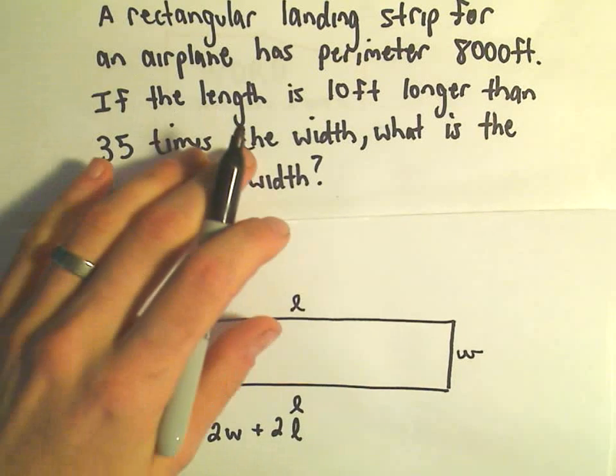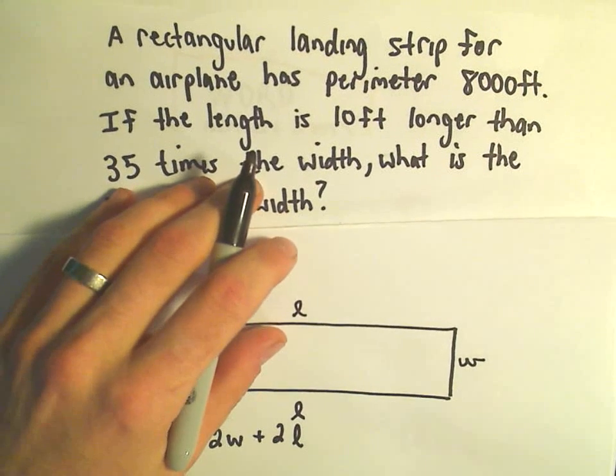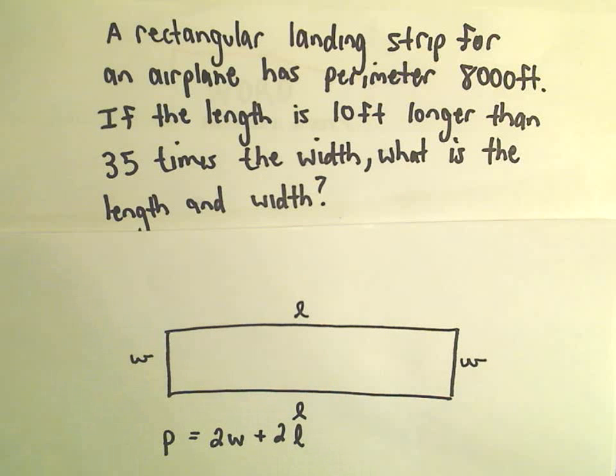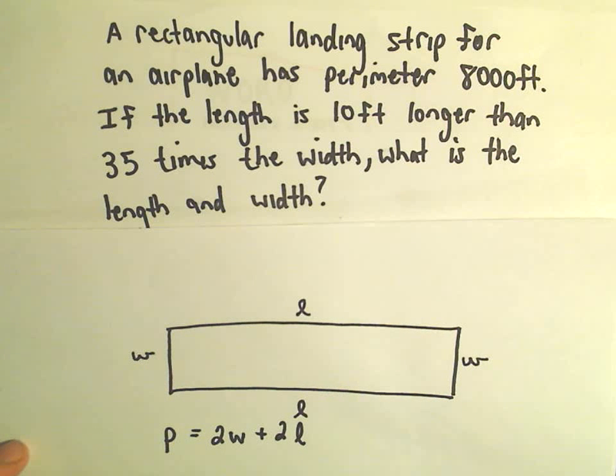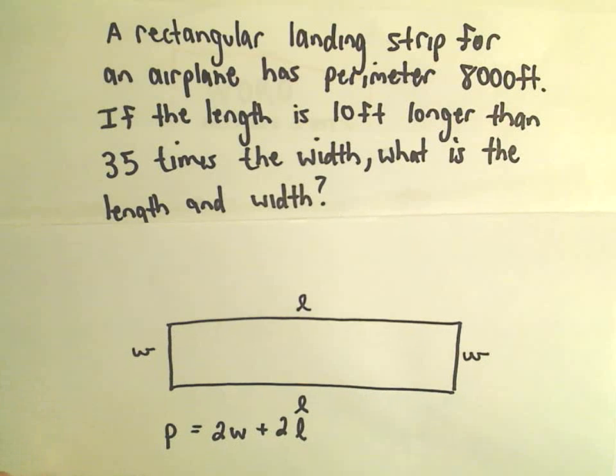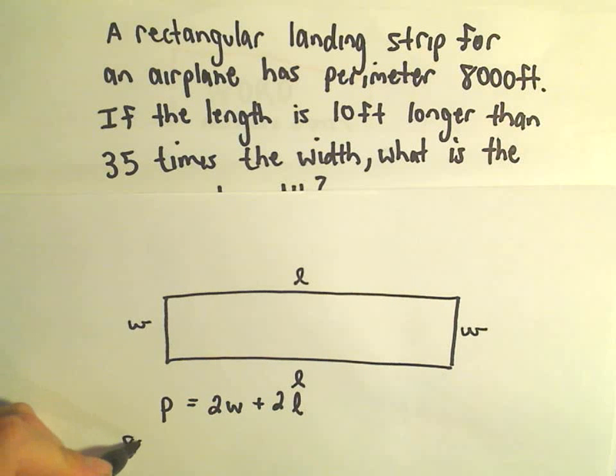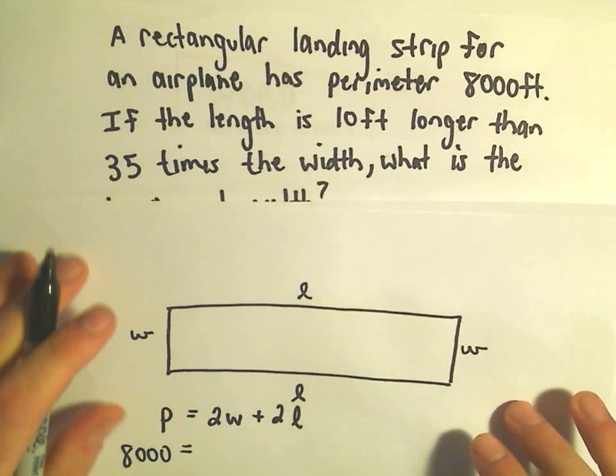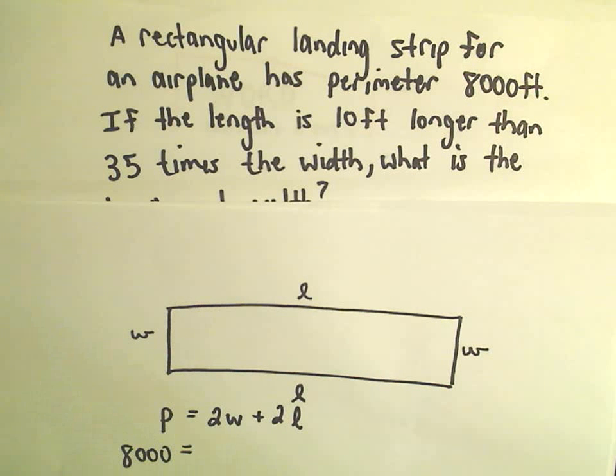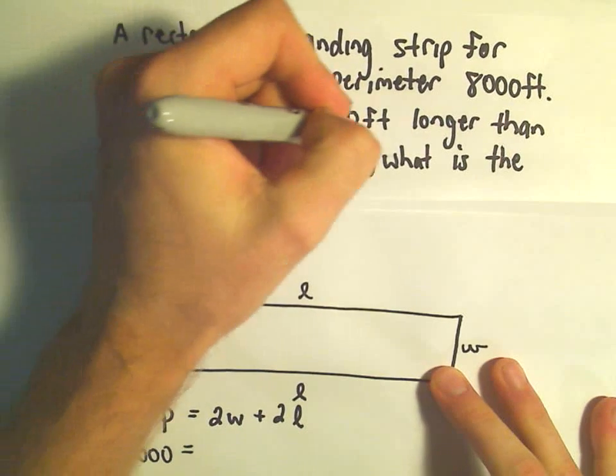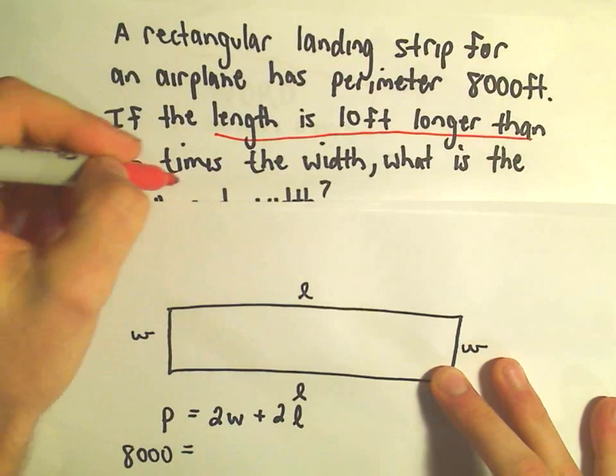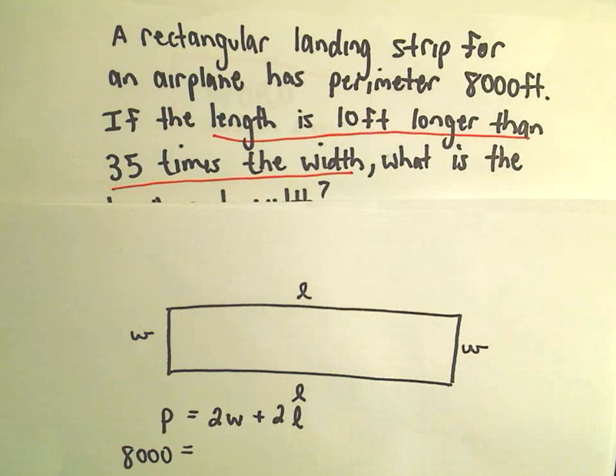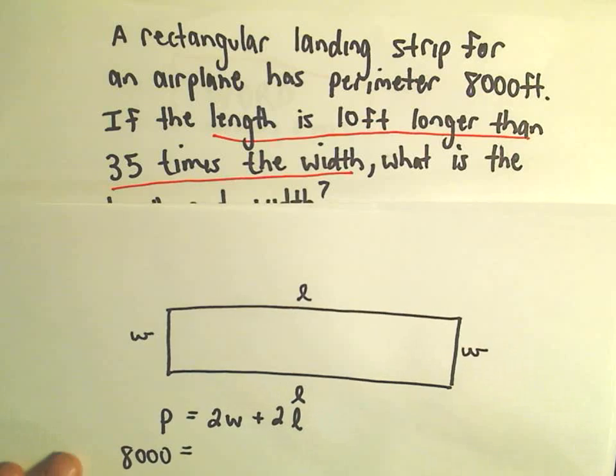Now we have to start dissecting the English and coming up with a little bit more information. We know that the perimeter is 8,000 feet. That's given to us. So I can simply plug in the 8,000 on the left side. And now the more complicated part. We have to somehow incorporate this fact that the length is 10 feet longer than 35 times the width. So we have to create a little equation that relates that information together.